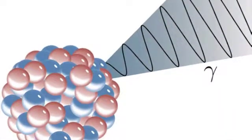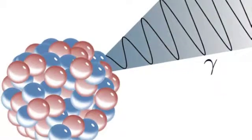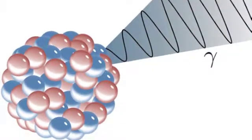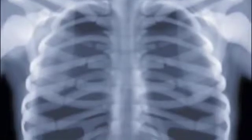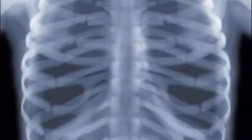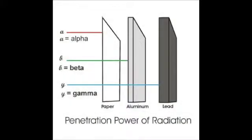Waves of energy that travel at the speed of light are called gamma and x-rays. Technetium-99m emits gamma rays, which can travel further through the air than either alpha or beta particles. X-rays and gamma rays come from different places in an atom: x-rays come from the electron shells, while gamma rays come from the nucleus. Gamma and x-rays are both generally blocked by various thicknesses of lead or other heavy metals.